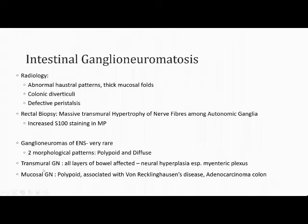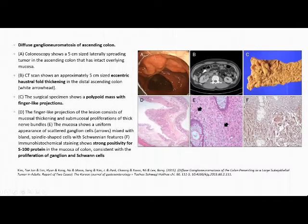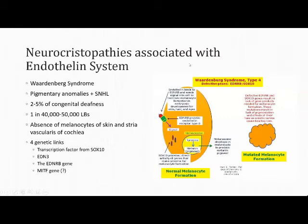Ganglioneuromas of the enteric nervous system have two morphological patterns: polypoid and diffuse. In transmural forms, all layers of the bowel wall are affected with neural hyperplasia especially of the myenteric plexus. In the mucosal form, they are polypoid and associated with von Recklinghausen's disease or adenocarcinoma of the colon. Colonoscopically, ganglioneuromas appear as polypoid masses with finger-like projections and show positive S100 staining on histopathology. CT imaging demonstrates eccentric haustra fold thickening.